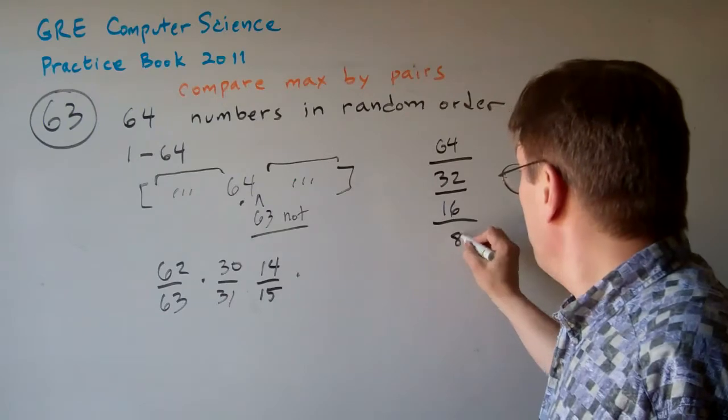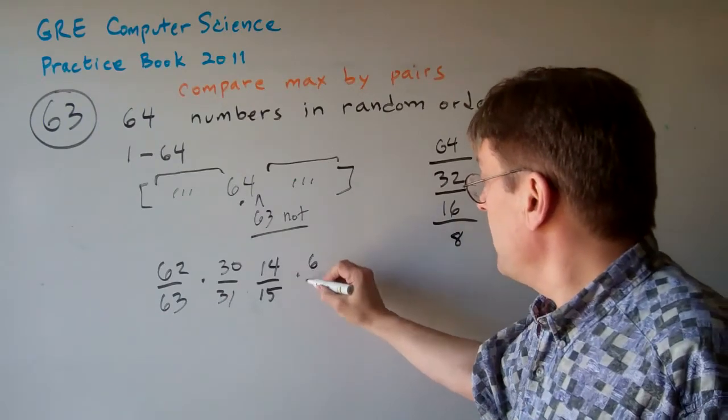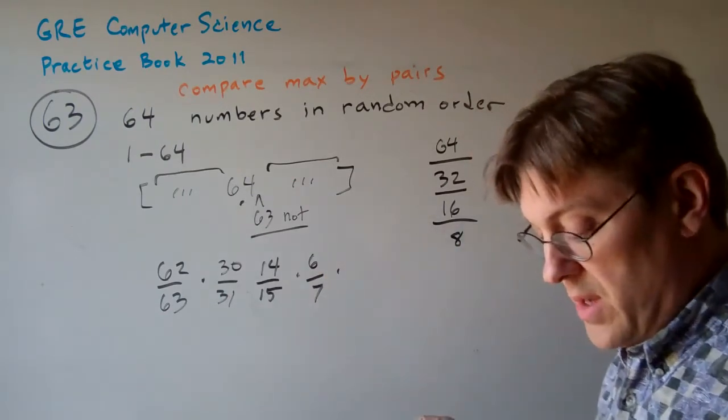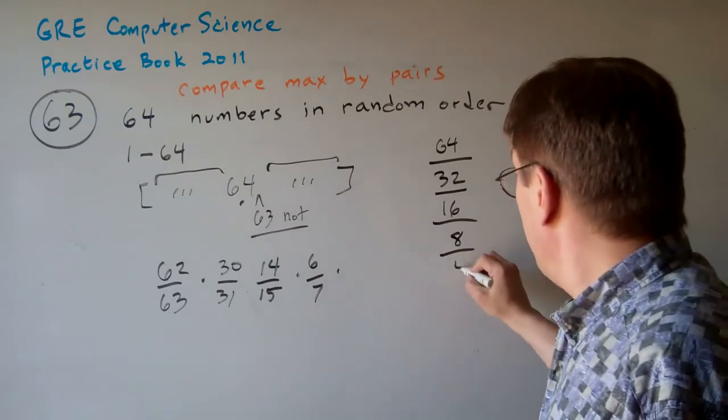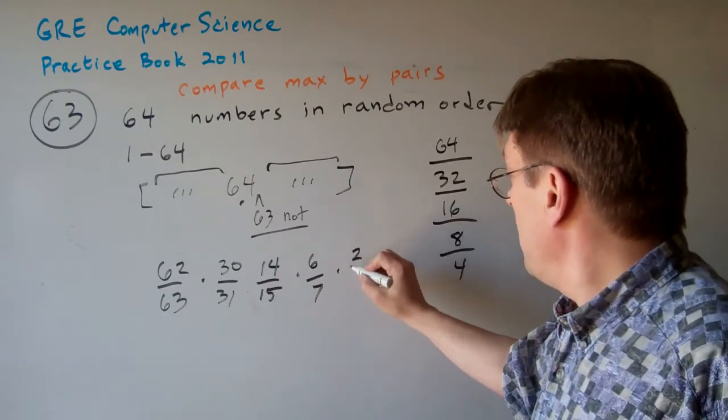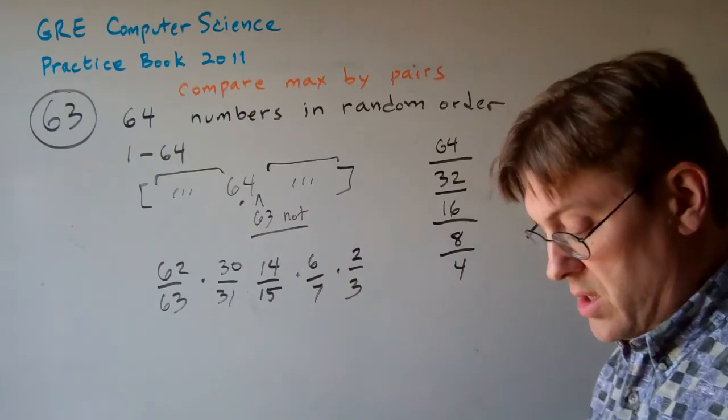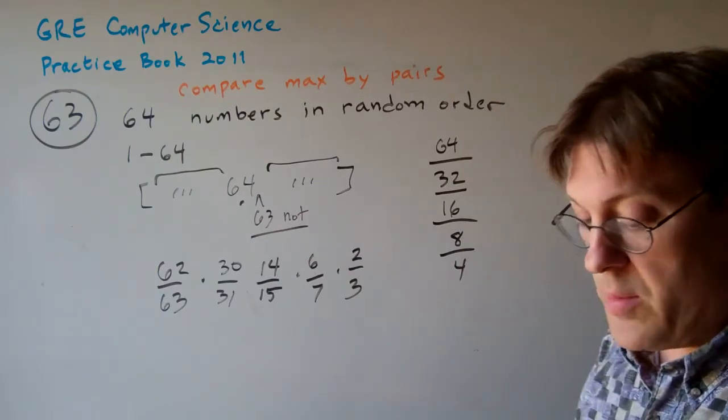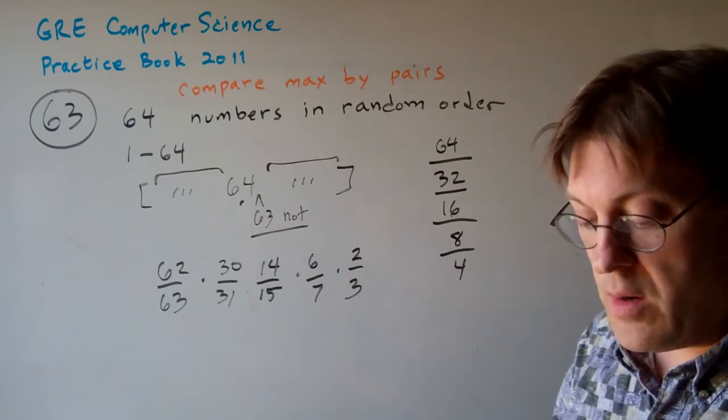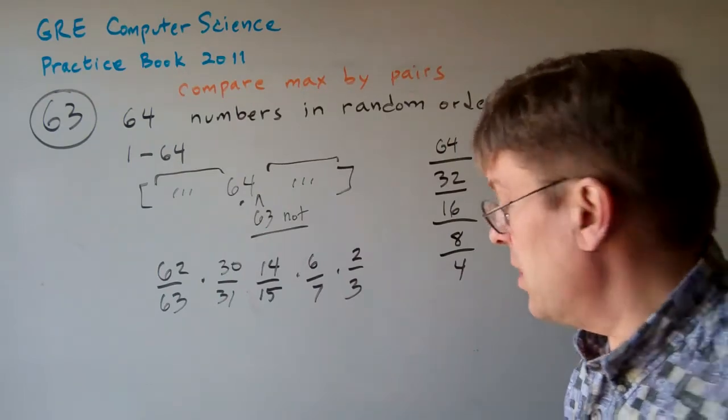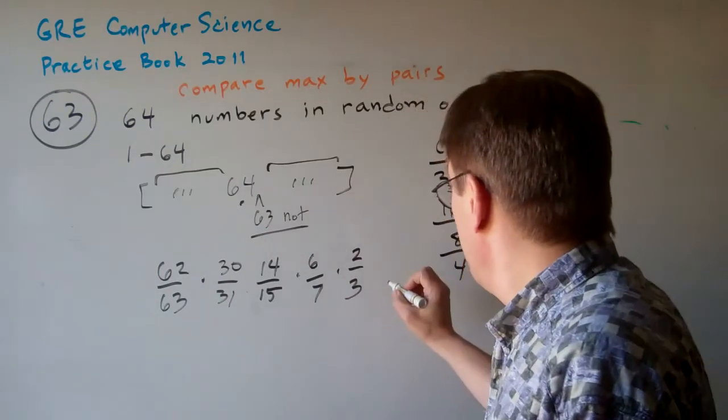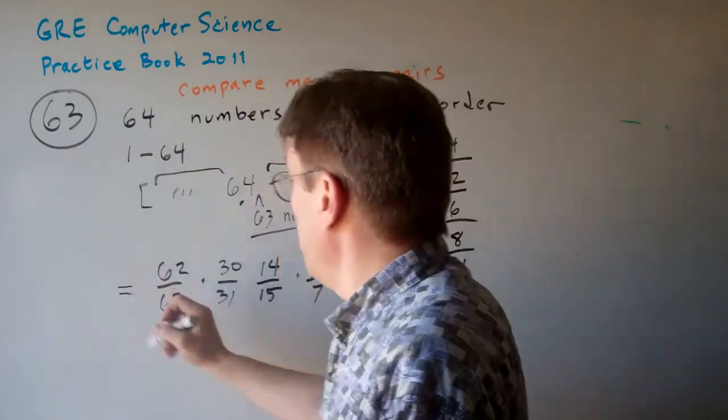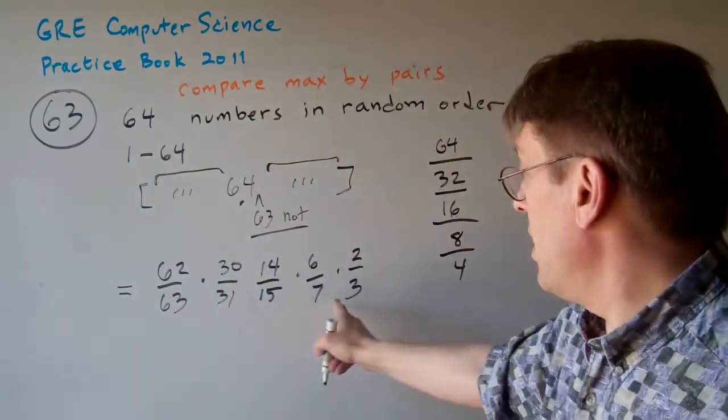The same happens when it reduces down to 8. There's going to be 6 out of 7 spots it could possibly be. When it reduces down to 4, then there's going to be 2 out of 3 spots that it could possibly be. And this asks, what's the probability that the number 63 will appear in the final two-element list?